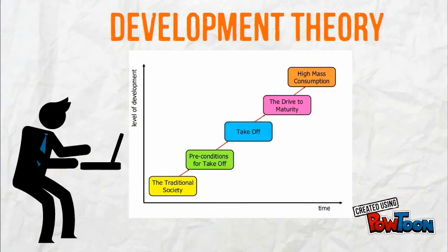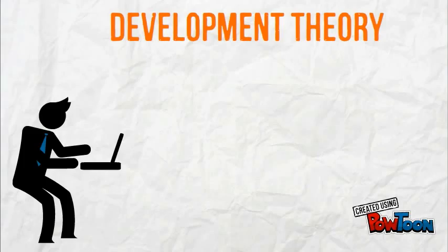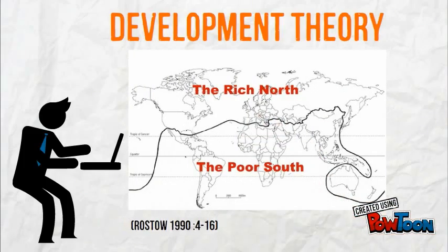Rostow's theory shows five stages of development, just like a child growing into an adult. He theorizes that the global south is stuck at the take-off stage. However, through aid and development, the North has helped the global south to stabilize their development.